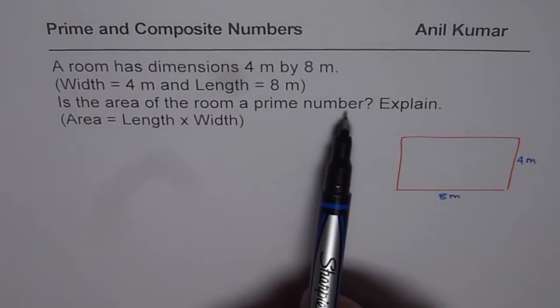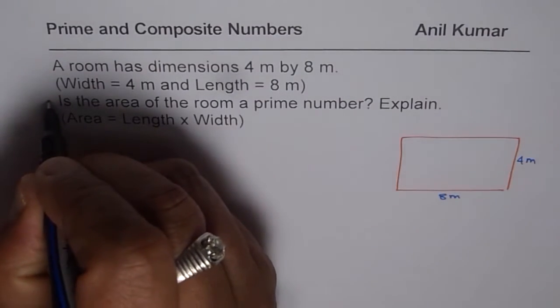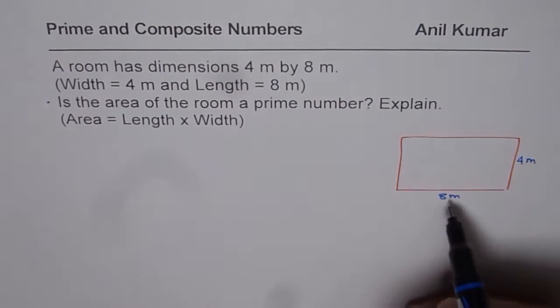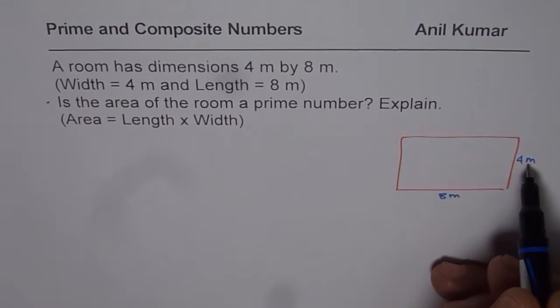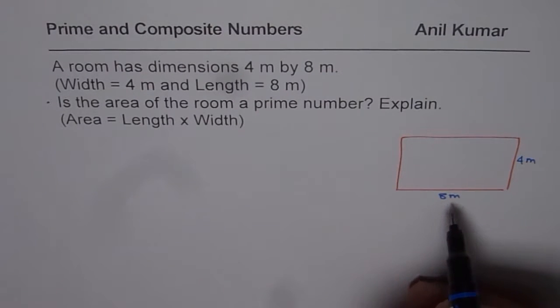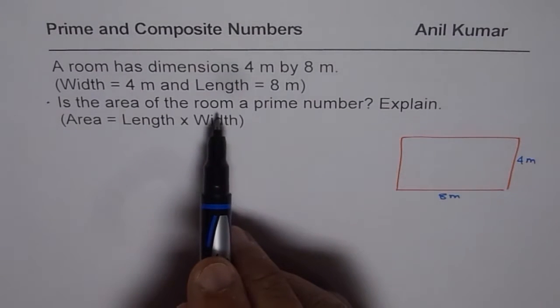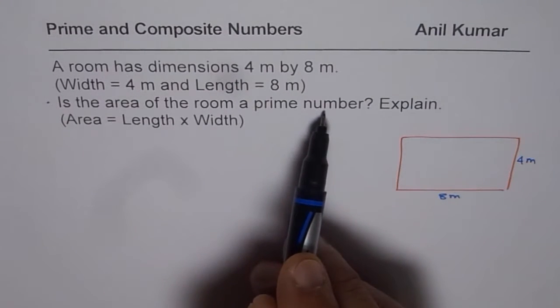Is the area of the room a prime number? That is the question for you. We are given a room whose dimensions are 4 meters by 8 meters. The question is, is the area of room a prime number? Explain.